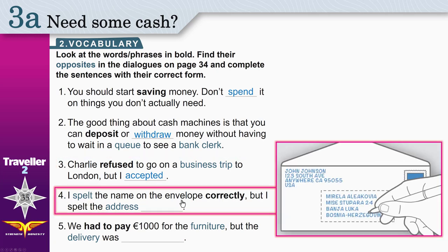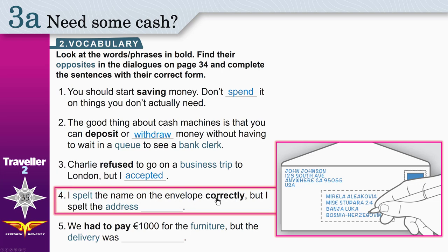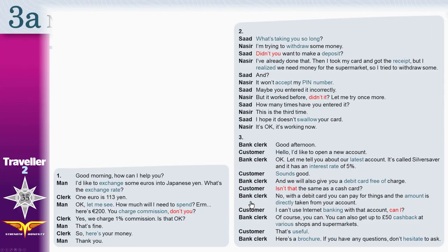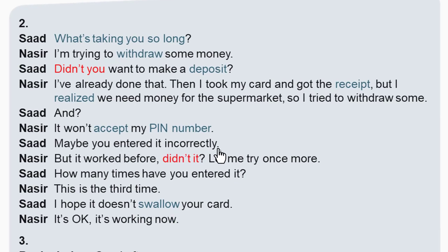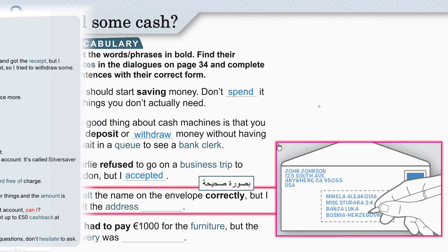Four. I spelled the name on the envelope. This right here is an envelope, and I spelled the name — spelt is the past of spell. When you spell, you form words by writing letters. The name was spelt correctly, in the right way. But I spelled the address incorrectly. Address is the place where I live or the place where I want to send the envelope. The opposite of correctly is incorrectly — in a wrong way.